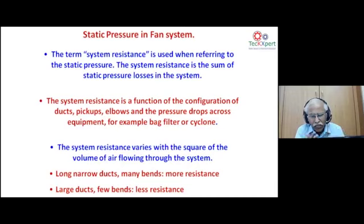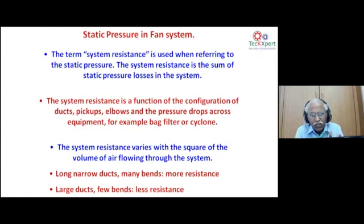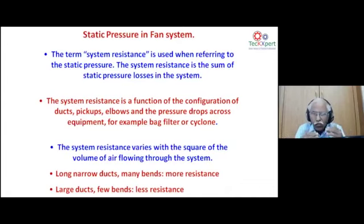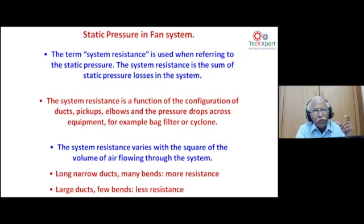System resistance is the sum of static pressure losses: duct configuration, duct size and length, pickups, elbows, and pressure drops across equipment. More elbows and pickups mean more pressure drop. Open and clean ducts from the reverse end periodically — this cleaning alone reduces system resistance. System resistance varies with the square of airflow volume — higher system resistance automatically reduces volume flow. Longer, narrower ducts with many bends mean more resistance; larger ducts with fewer bends and appropriate MOC (material of construction) reduce resistance.